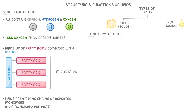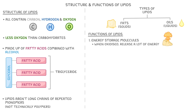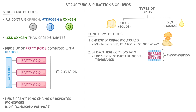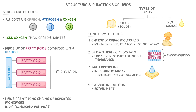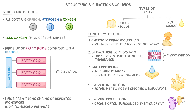In living organisms, there are several key functions of lipids. First, they're major energy storage molecules because when they're oxidised, they release a lot of energy that we can then use. They're also vital structural components, especially phospholipids, which form the basic structure of our cell membranes. Lipids are great for waterproofing because they're insoluble in water, so they can form water-resistant barriers. They also provide insulation, helping us to retain heat and sometimes act as electrical insulators — for instance, the lipid layer around nerve cells helps with nerve impulse transmission. Finally, lipids provide protection, which is why our organs are often surrounded by a layer of fat that acts to cushion them.